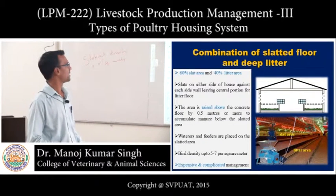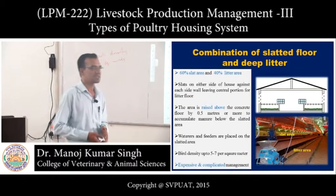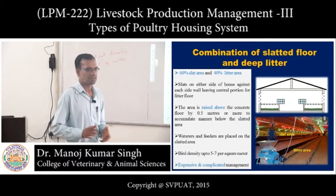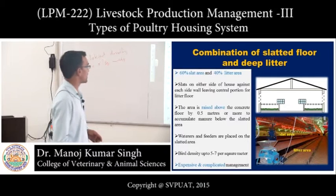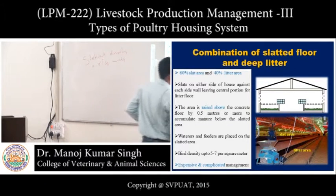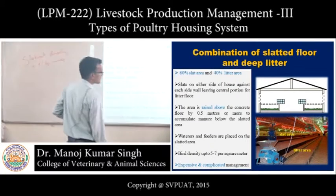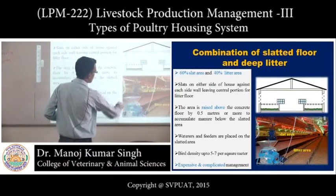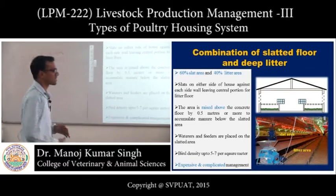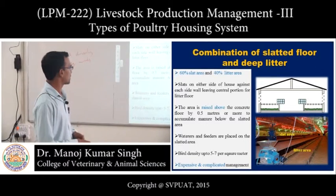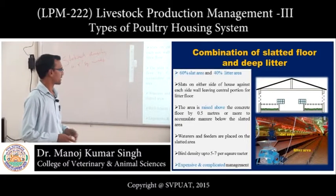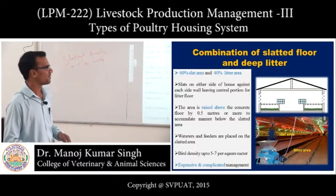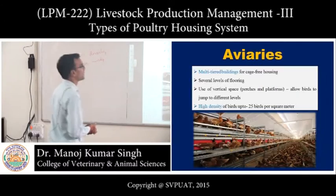Next is the combination of slatted floor and deep litter system. In this system, 60 percent of the area is slatted and 40 percent is deep litter. The slatted area is raised 0.5 meters or more above the concrete floor to accumulate manure below. Water and feeders are placed on the slatted area. Bird density is up to 5 to 7 birds per square meter.